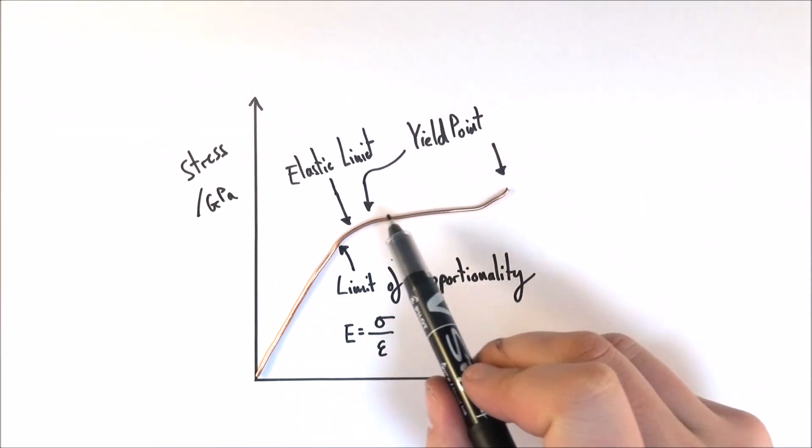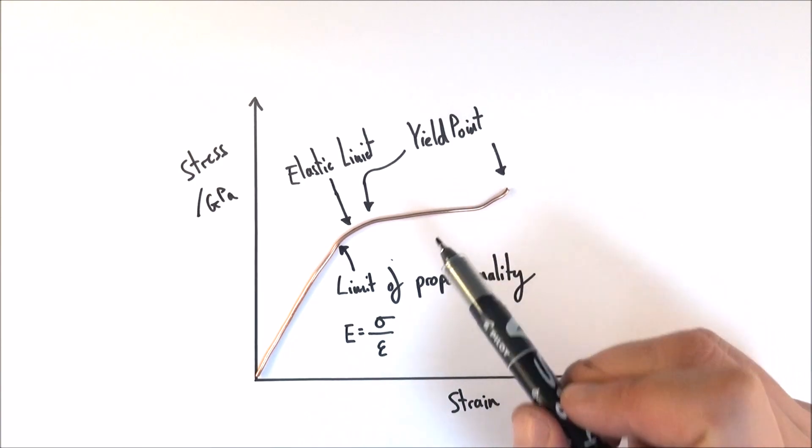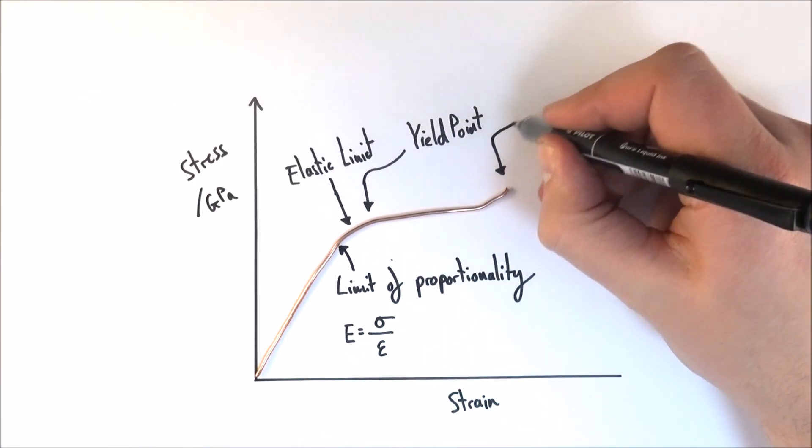So this is what we call a yield point, and then we have this region of plastic behavior where, if you take away the load, it doesn't go back to its original shape, and this happens until we get to this point here.